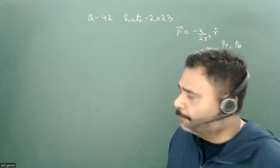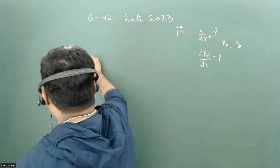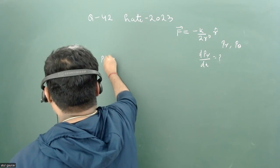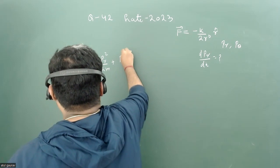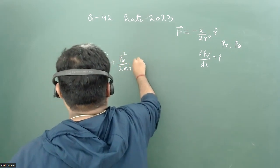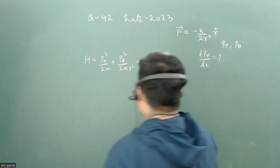When we write the Hamiltonian in a two-dimensional plane, the Hamiltonian equals pr²/2m plus p_theta²/2mr². We can assume there is a potential that is only a function of r.